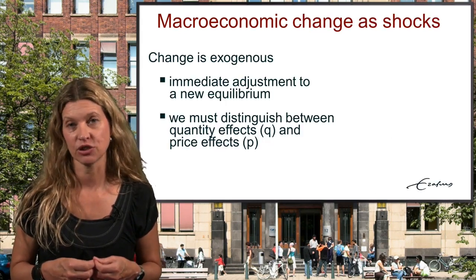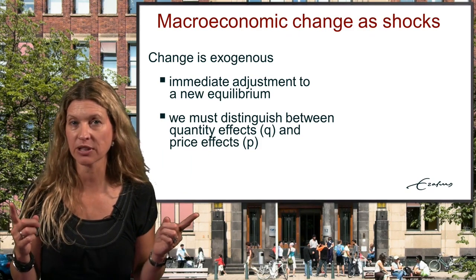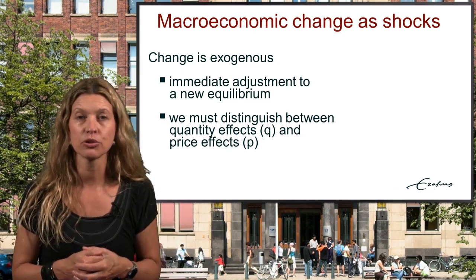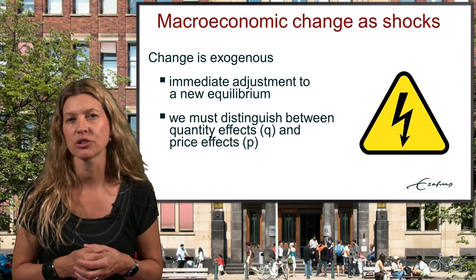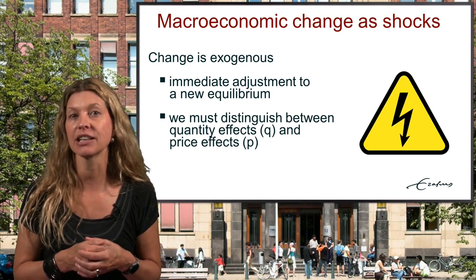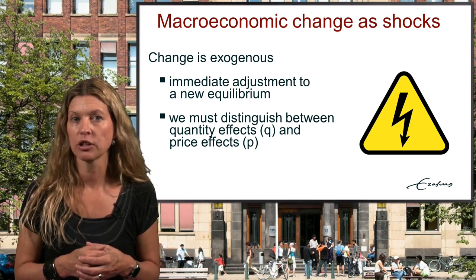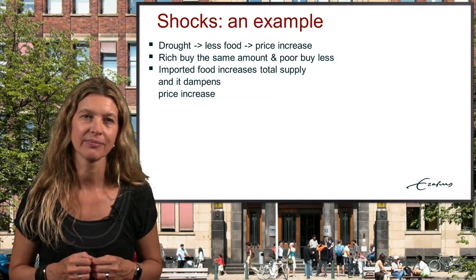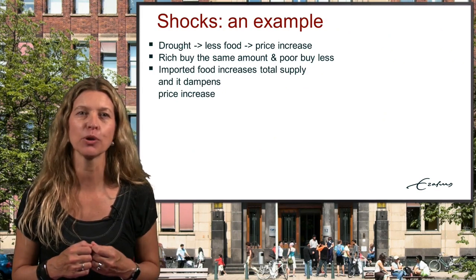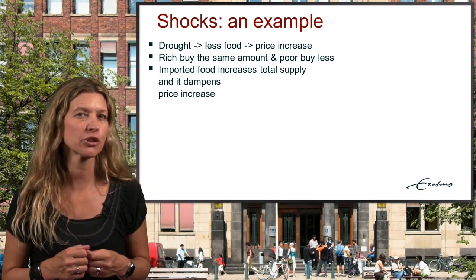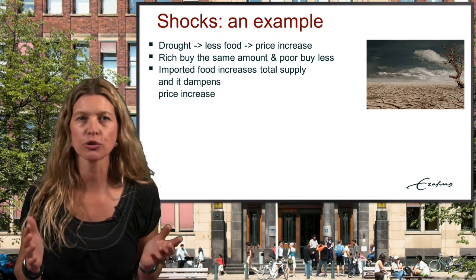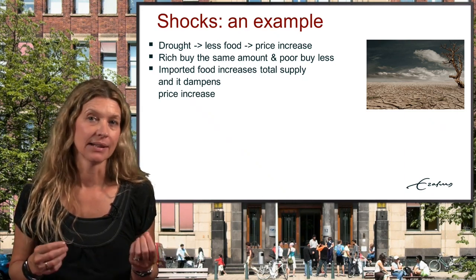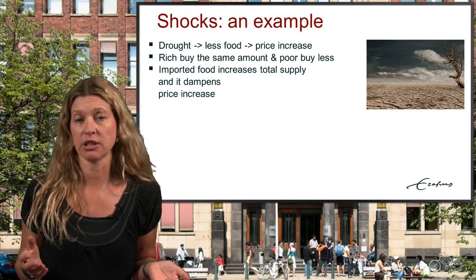In a closed system, change occurs not from within but from outside, through a shock to the system. In other words, in neoclassical economics, change is exogenous. A shock is followed by an immediate and final adjustment to a new equilibrium. Let's go through an example of exogenous change, focusing on the food market. Let's assume that the shock to the food market is a drought, which leads to a lower supply of food and hence an increase in food prices, because food is now more scarce than before.